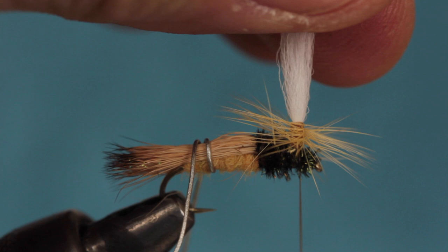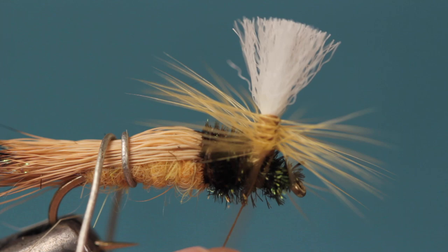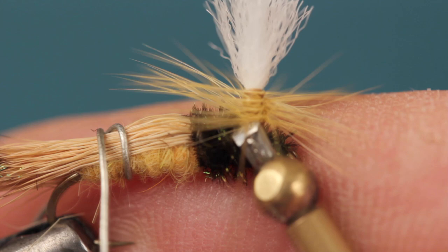Although it takes a bit of practice, a four or five turn whip finish done around the base of the post neatly and firmly secures your tying thread. Once the whip finish is completed, you can snip or cut your tying thread free. Adding a small drop of head cement to the base of the post will ensure nothing comes unraveled.